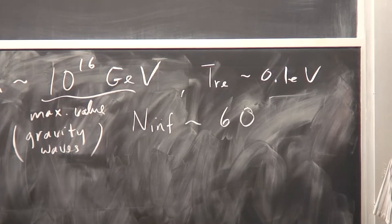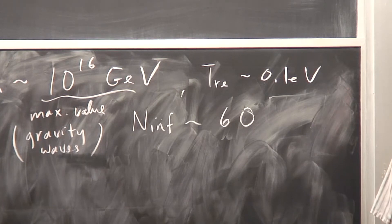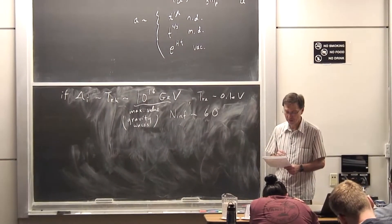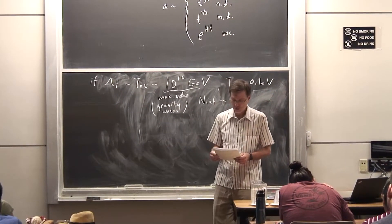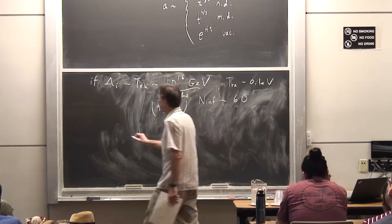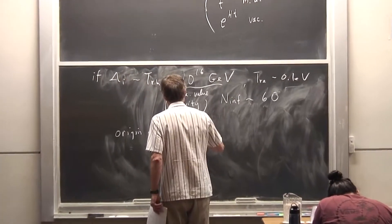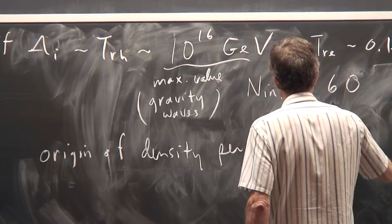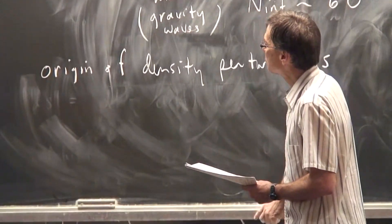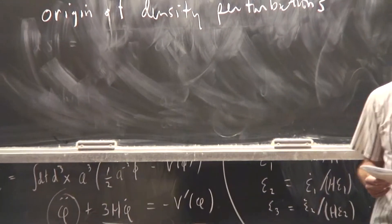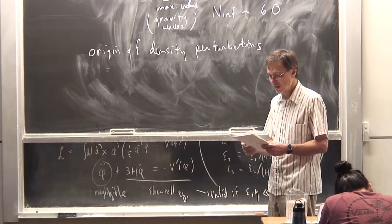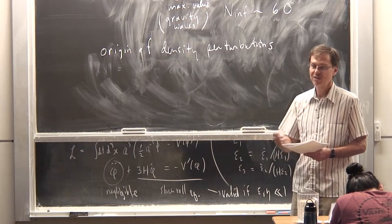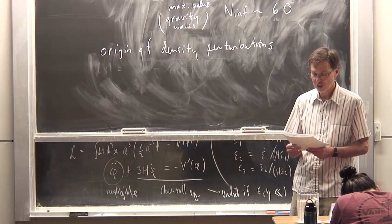Around 1982 and 1983, it was also realized — by Hawking, Starobinsky, Guth and Pi, and Bardeen, Steinhardt, and Turner — that inflation solved one more really big problem: the origin of density perturbations. People already knew that a certain level of inhomogeneities, of order one part in 10 to the fourth, was needed in the universe to explain observed structure formation and galaxy formation.